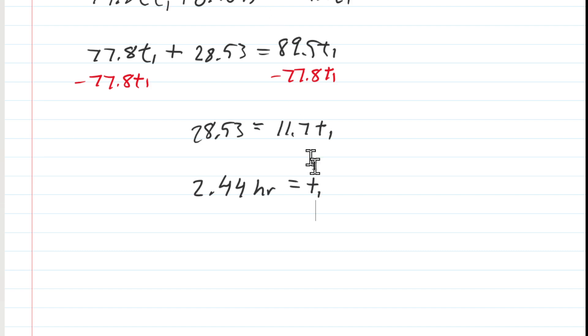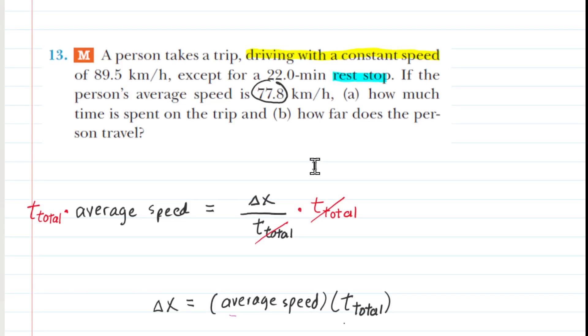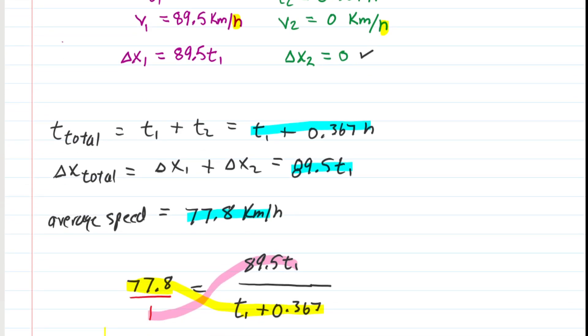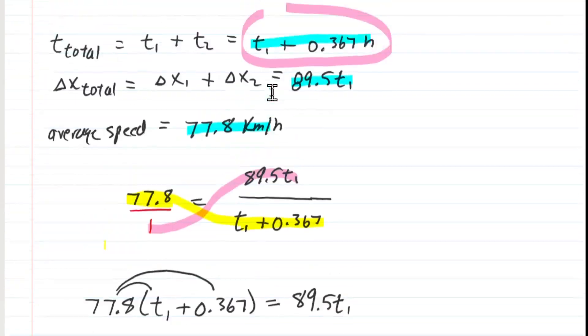Now let's be careful about how we interpret that answer because the question asked, if we go all the way back up to part A, how much time is spent on the trip? On the trip. Well, the trip had a total time, let's not forget, of T1 plus 0.367. So we're not done quite yet here to find the total time, which was for the entire trip. We have to add T1 and T2. We just found T1 and we know T2 from earlier. Once we add those together, we get the total time. And that comes out to about 2.81 hours. So that's the correct answer to part A of the problem. The entire trip took 2.81 hours.